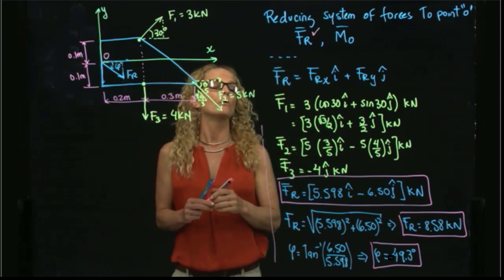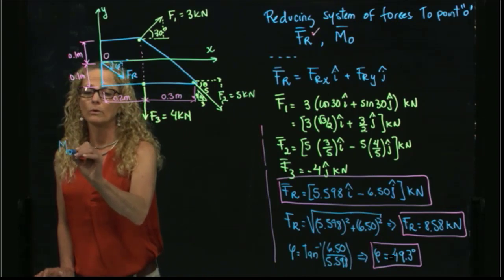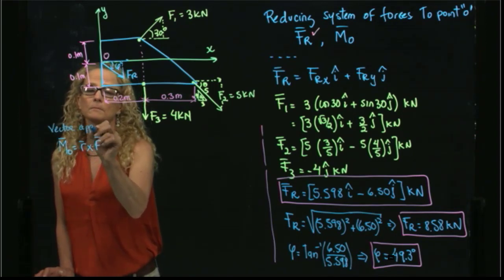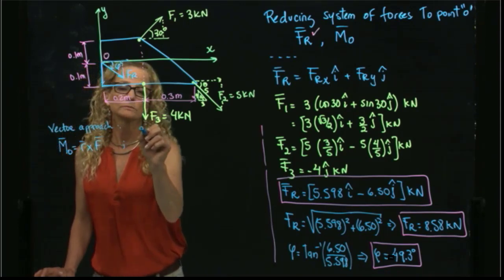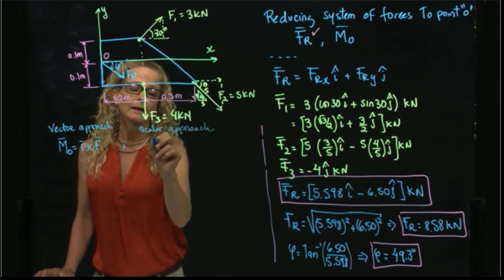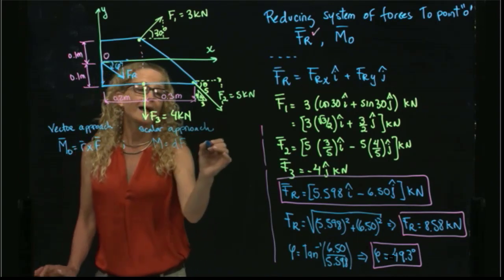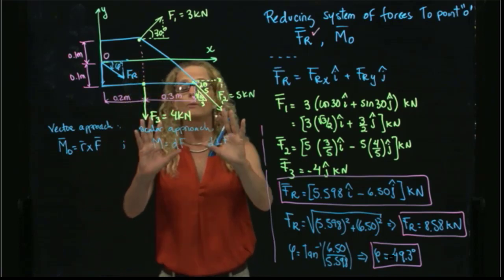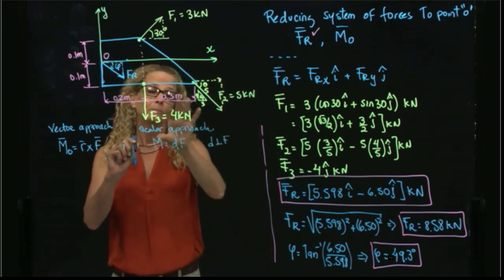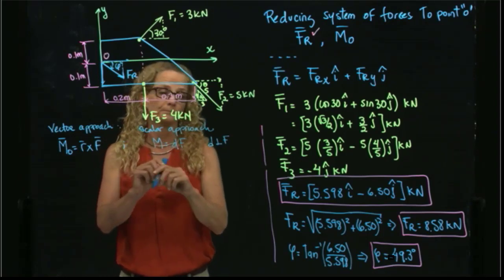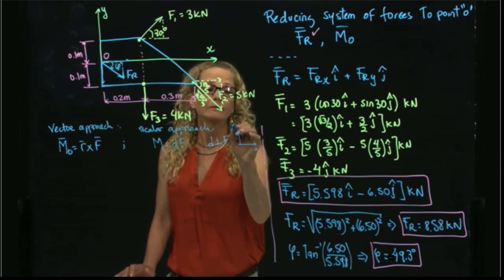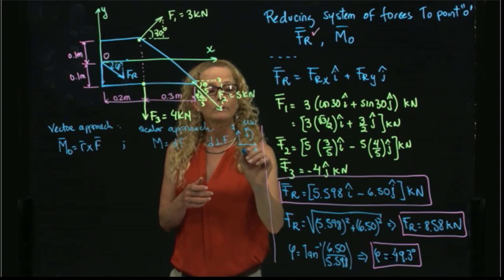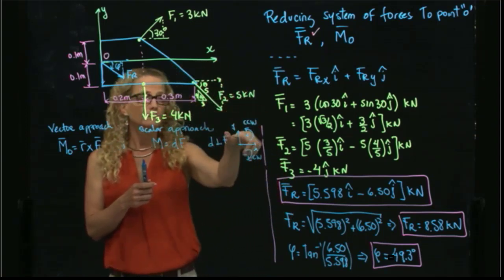Now let's find the moment. The moment equals r cross F in vector form, or distance times force (with distance perpendicular to force) in scalar form. Since this is a 2D problem, I'll use the scalar approach and determine positive or negative direction with the right-hand rule. The moment is positive counterclockwise and negative clockwise.